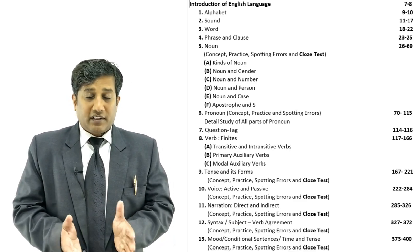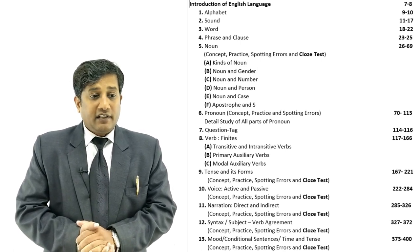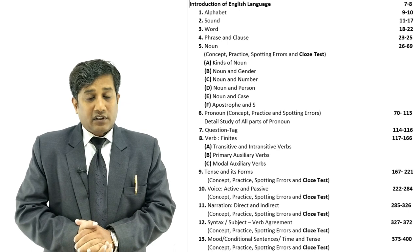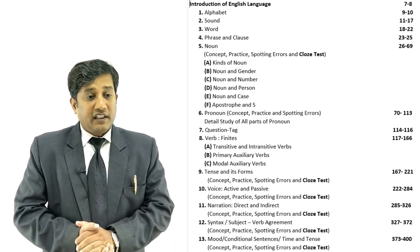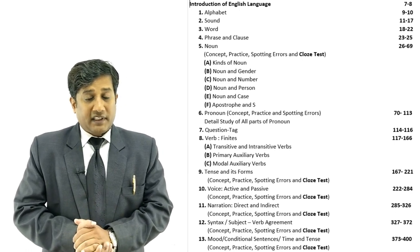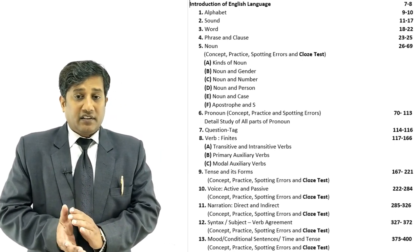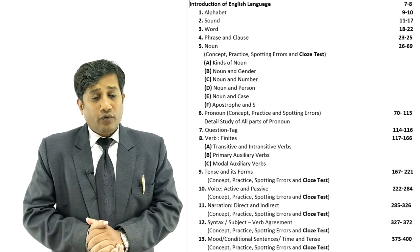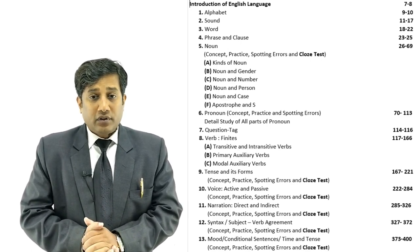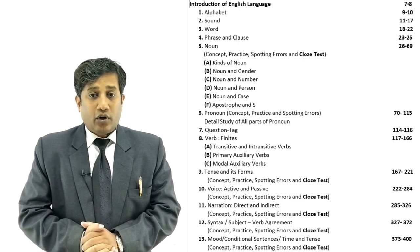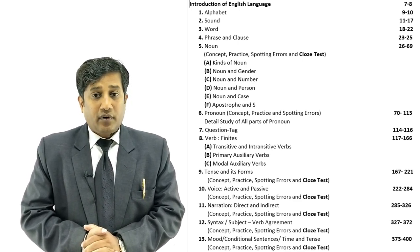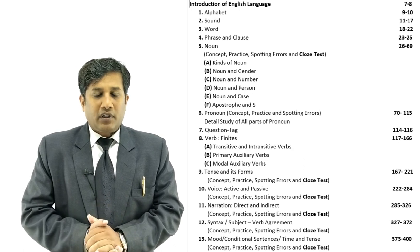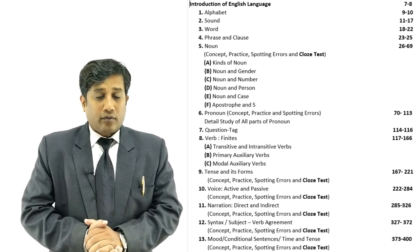The second topic is Sound — vowel sound and consonant sound. The third topic is Word — the types of words are explained, plus prefix, suffix, infix, root words, and syllables are also discussed. The fourth topic is Phrase and Clause. Generally people have a lot of confusion in phrase and clause, but it is covered in just three to four pages and everything will be clear — no time or energy is wasted.